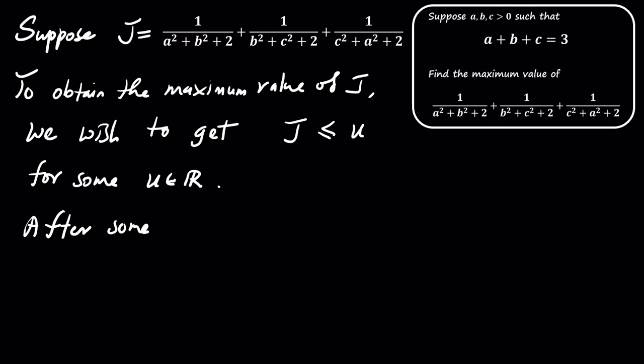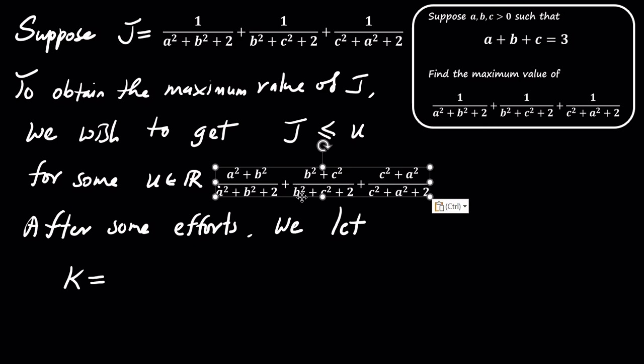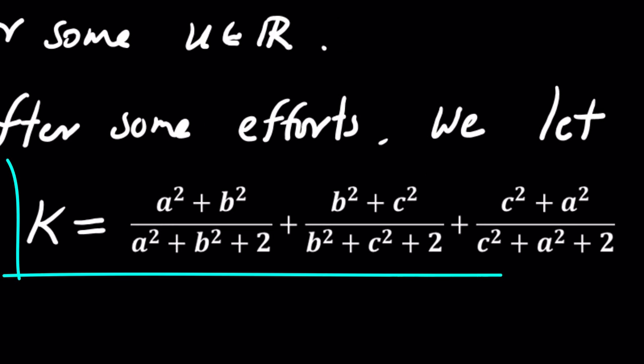After some algebraic manipulation, we introduce a new variable K. K equals A squared plus B squared over A squared plus B squared plus 2, plus B squared plus C squared over B squared plus C squared plus 2, plus C squared plus A squared over C squared plus A squared plus 2.